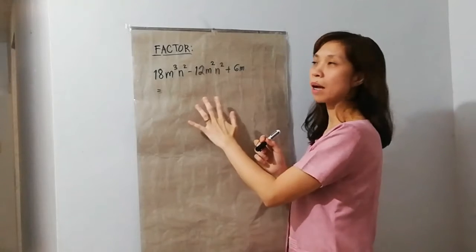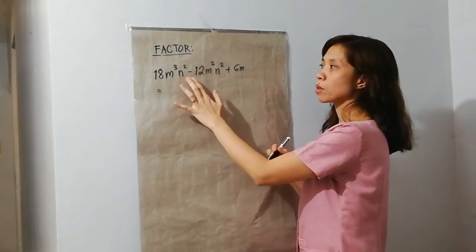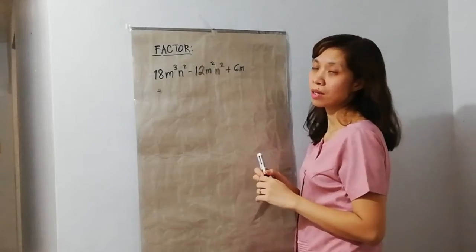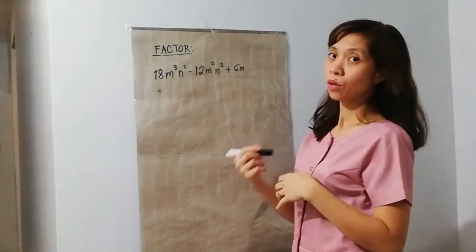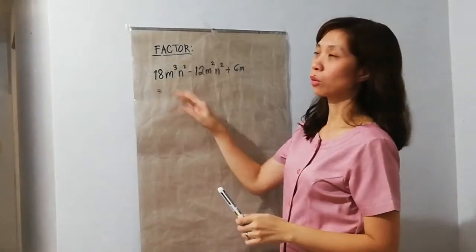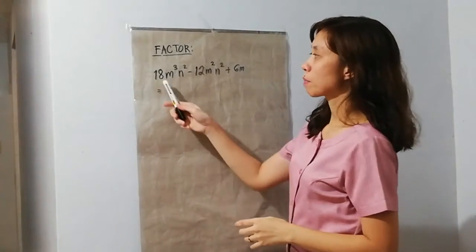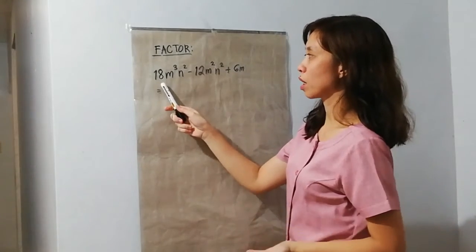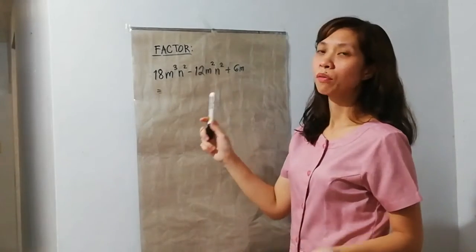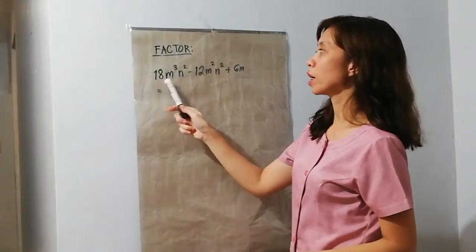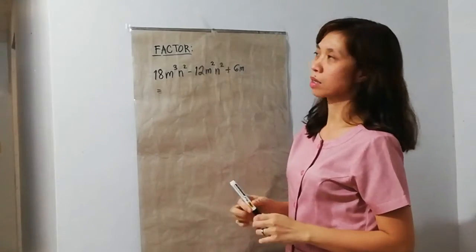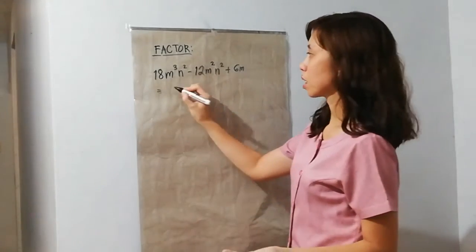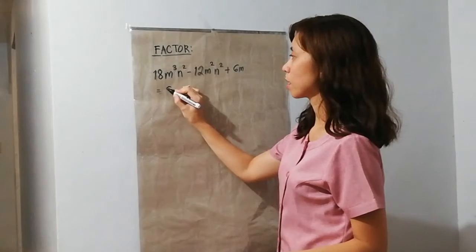For our third example, we have 18m cubed n squared minus 12m squared n squared plus 6m. So, ganun pa rin — look for the common factor. Since meron tayong numerical dito, numerical coefficients, tingnan natin kung meron silang common factor. We have 18, 12, and 6. So, common factor is 6.